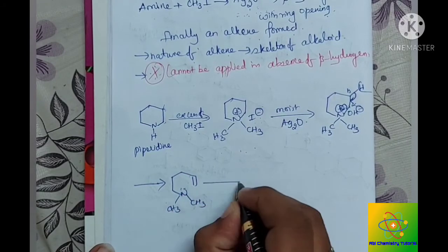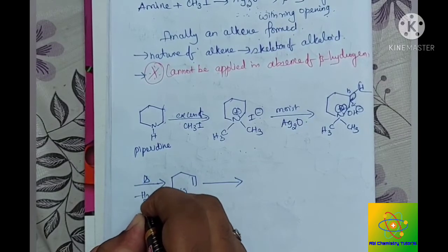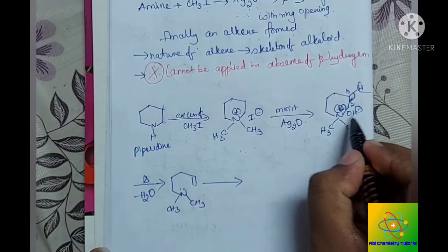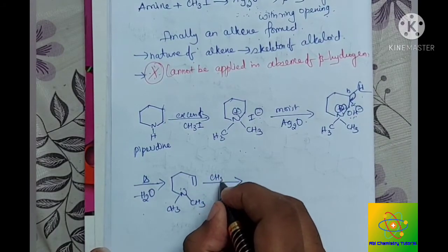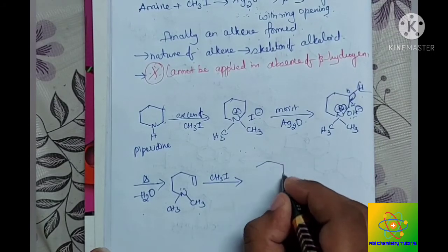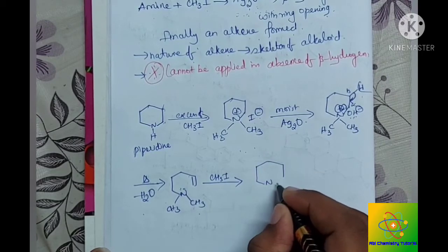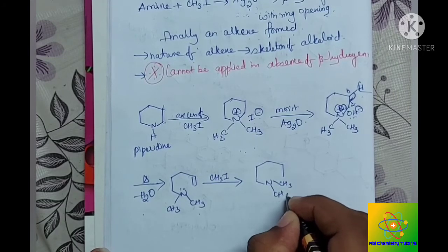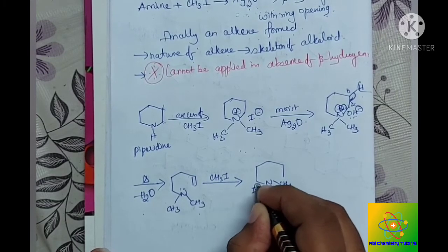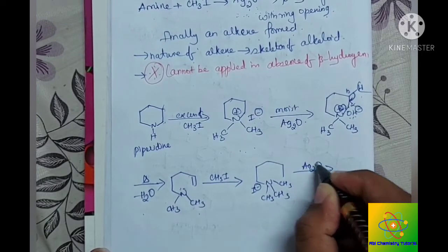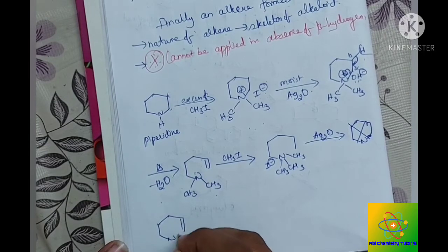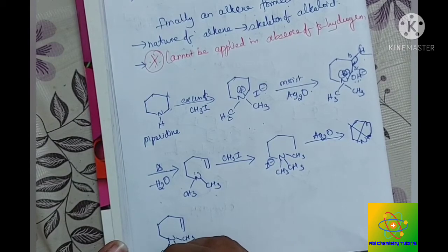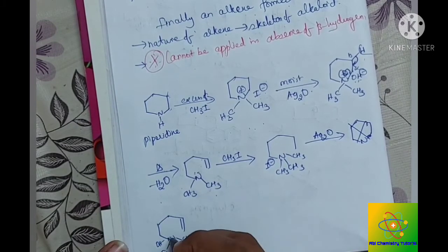Again this process is continued. Here we are heating, there is removal of water, this OH- and this H+. This H+ leaves as water to give this compound. Again we are treating with methyl iodide, so again once again we will get a quaternary ammonium salt with I-, and again Ag2O is added to get OH- and N+.